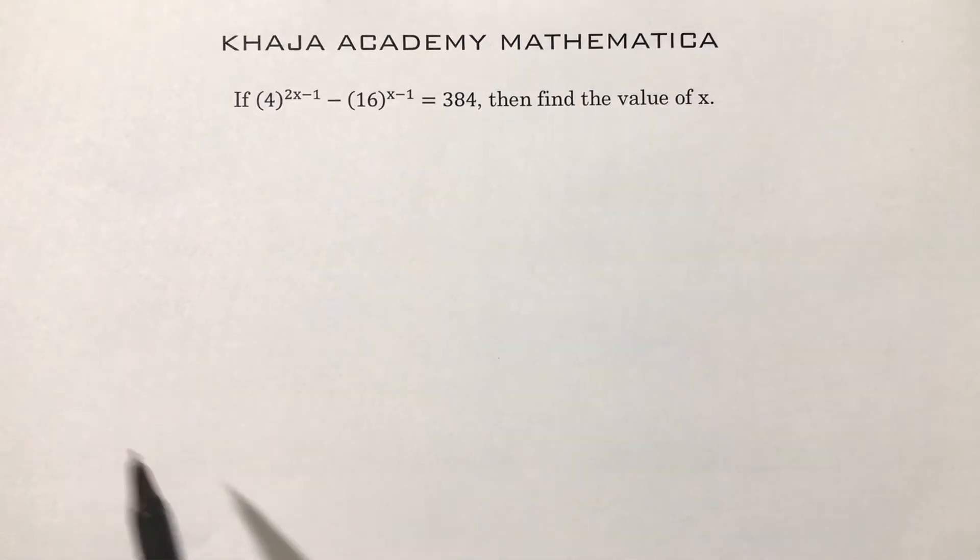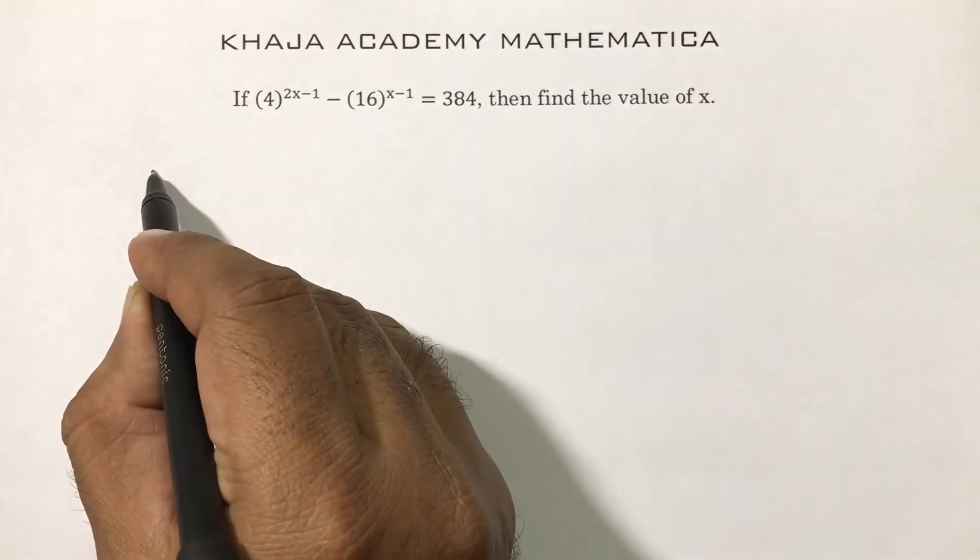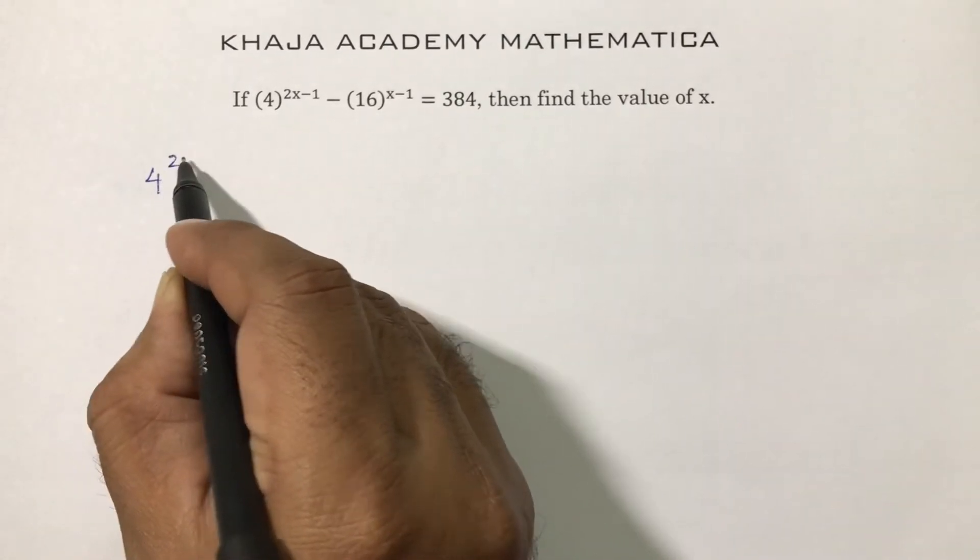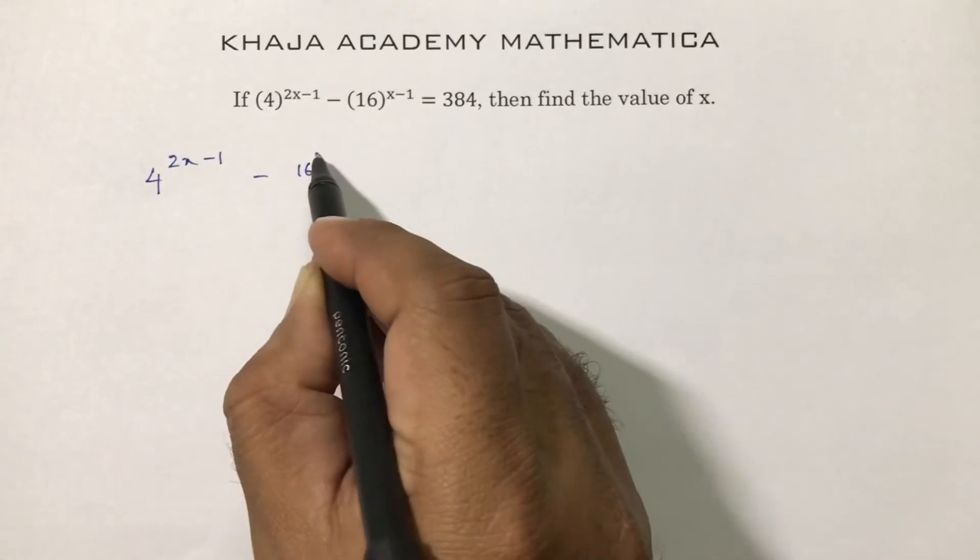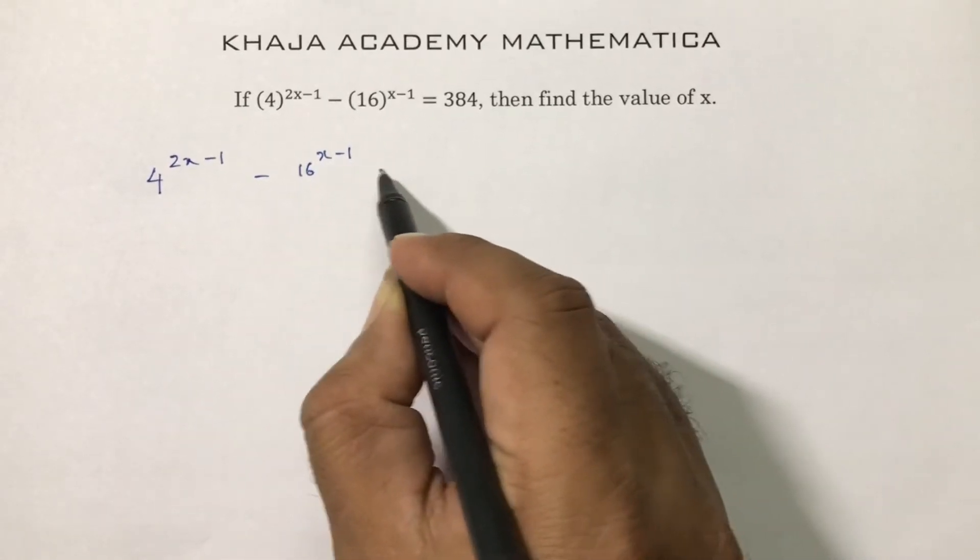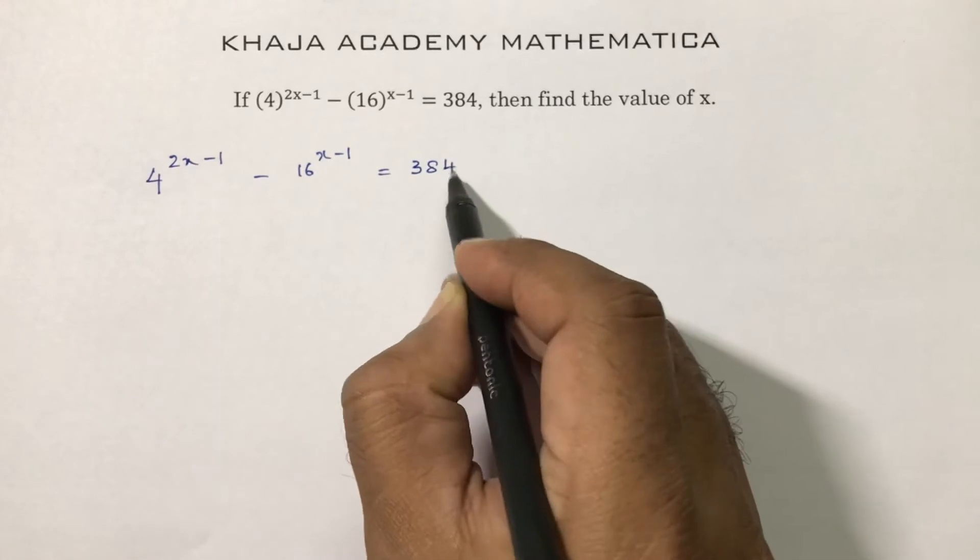If 4 power 2x minus 1 minus 16 power x minus 1 equals 384, then find the value of x. So here 4 power 2x minus 1 minus 16 power x minus 1 is 384.